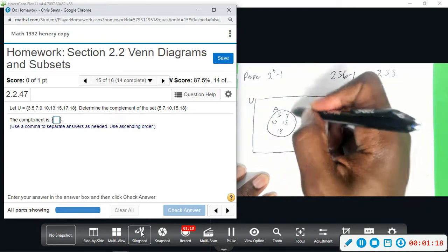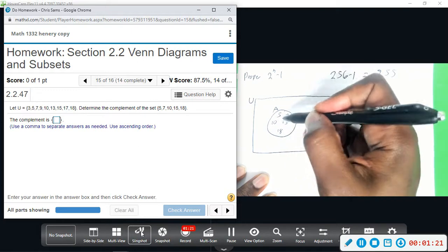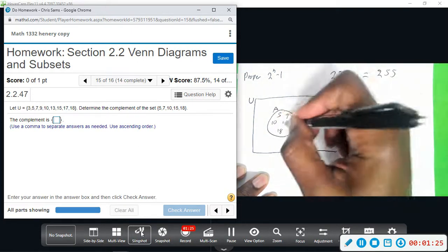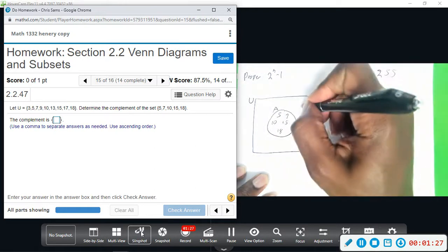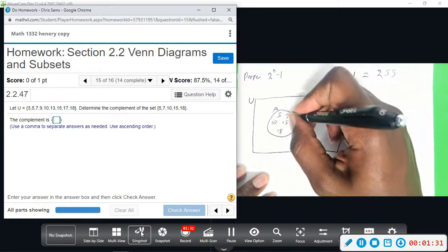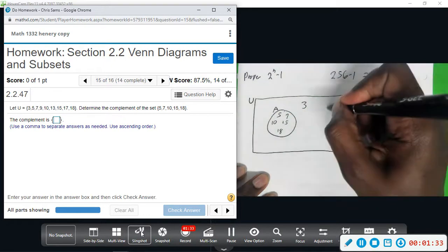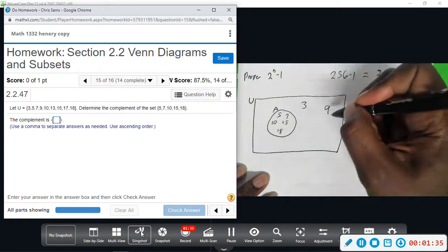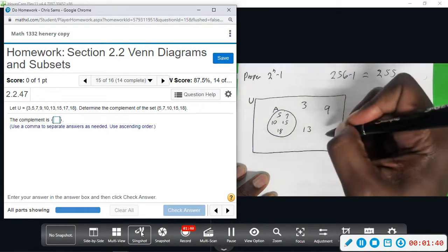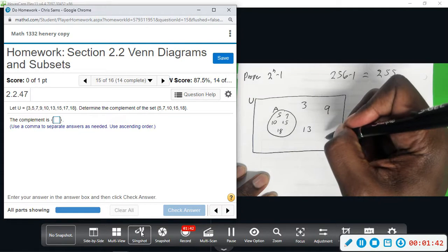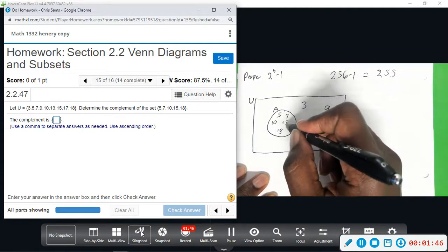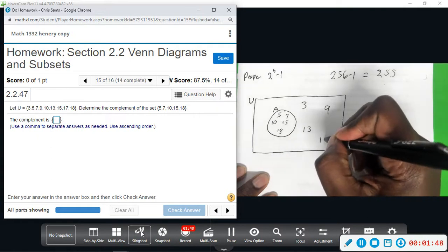Now, all of these are in U, but we're missing some, so the rest of those elements I'm going to put them outside of this circle A or this set A that I've created. So 3 is part of it, 5 we already have, 7 we have, 9 should be here, we already have 10, 13 should be here, and then 17 because we already have 15. So 17 and 18.